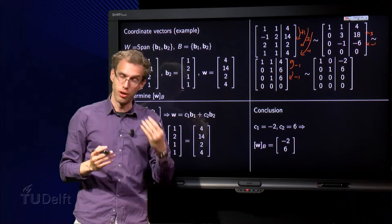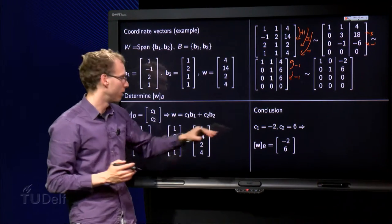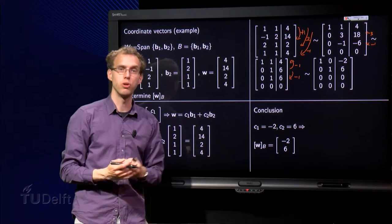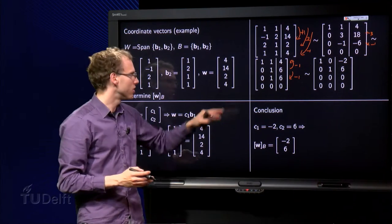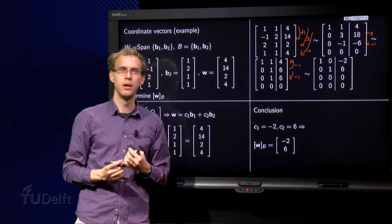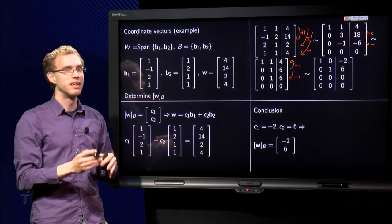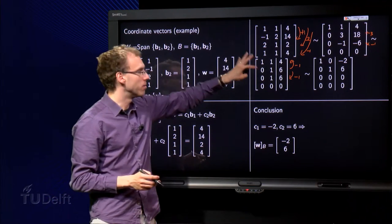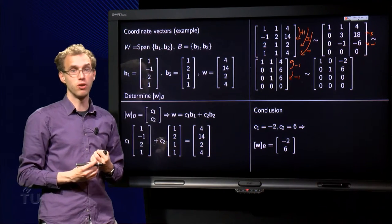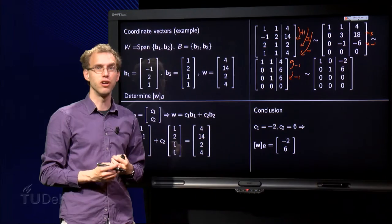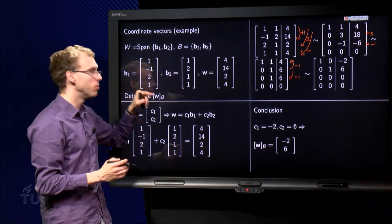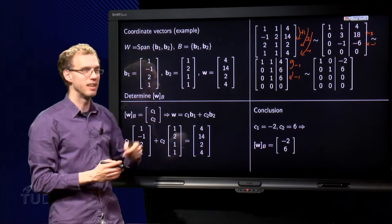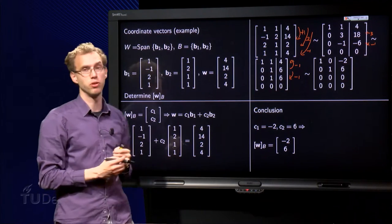So you have done the row reduction and you have found here your coordinate vector. You found one solution. Can it be that if you do computations this system becomes inconsistent? Well, that would be kind of silly. If this system would become inconsistent over here, that means that w is not in the span of b1 and b2—that means that w would not be in the capital W.